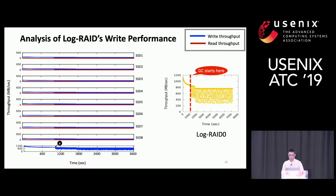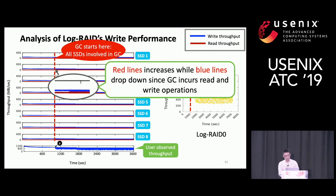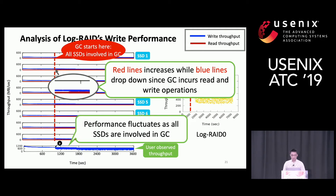Here is an analysis of Log-RAID's write performance. In the experiment, we used eight SSDs. Both left and right figures show the throughput of Log-RAID-0. In the left figure, we show individual throughput of all SSDs. The last row shows user-observed throughput. The blue line indicates write throughput while the red line is the internal write throughput. After garbage collection starts, the red line increases while the blue line drops since garbage collection incurs internal writes. Performance fluctuates as all SSDs are involved in garbage collection.